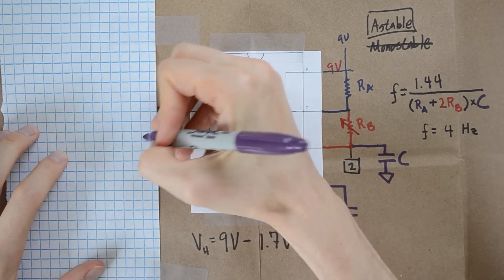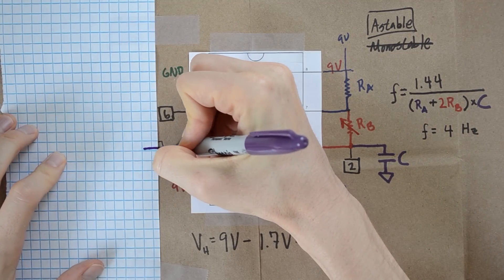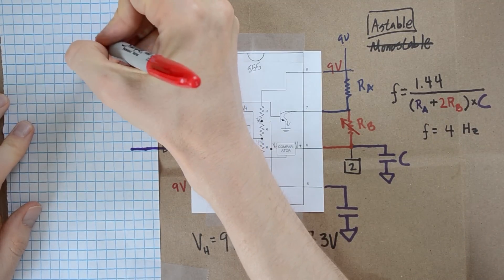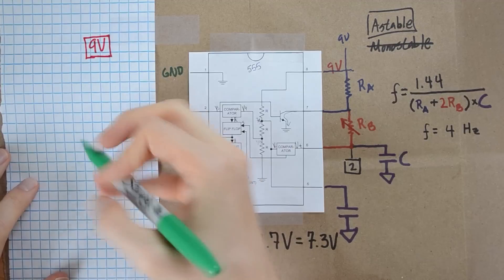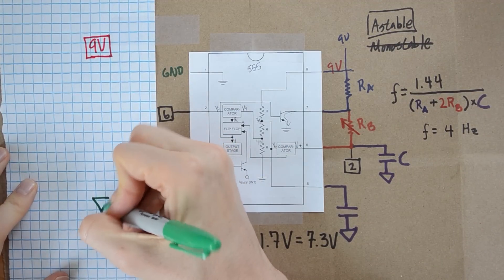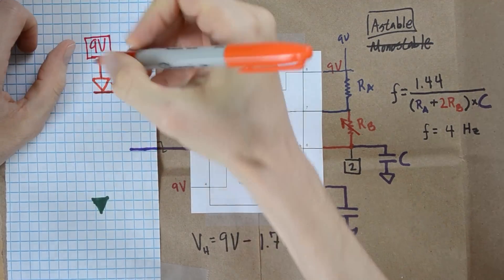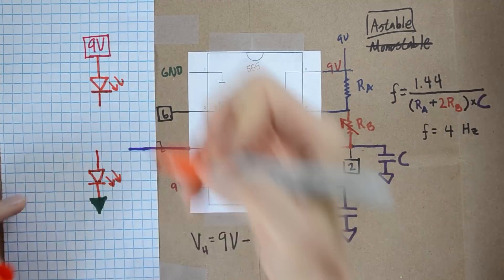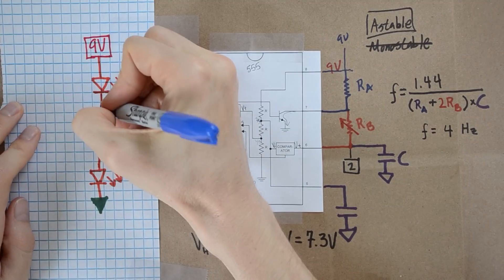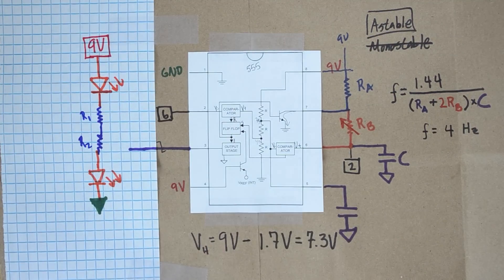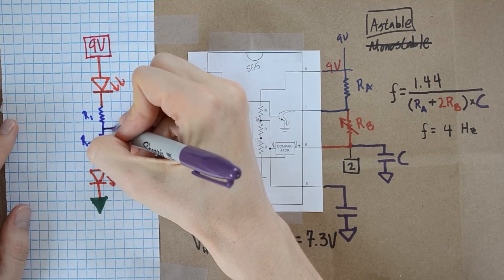So the first thing you can do with the output stage is you can take and hook these directly to some LEDs. Let's pretend that we have a 9 volt feed up here. Then we're going to have ground for our circuit down here at the bottom. So let's put some LEDs in here. The next thing that we're going to want is a couple of resistors to be able to control the current on these.